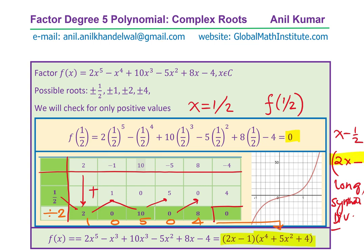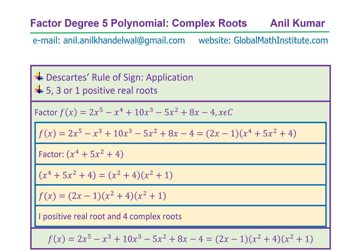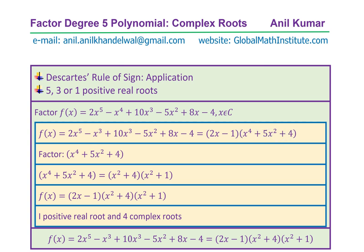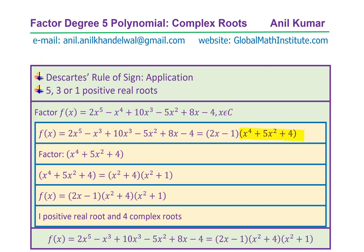We can now factor x⁴ + 5x² + 4. Treating it like a quadratic, we need two numbers with a product of 4 and a sum of 5 — those are 4 and 1. Therefore x⁴ + 5x² + 4 = (x² + 4)(x² + 1). So f(x) = (2x - 1)(x² + 4)(x² + 1).